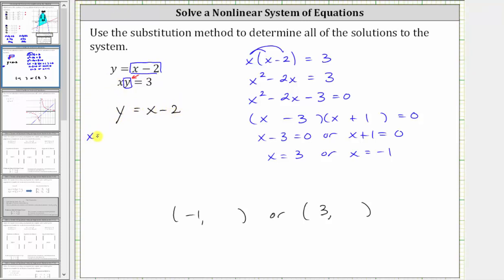So when x is negative one, we know y must equal negative one minus two, which is negative three. So the ordered pair negative one comma negative three is a solution.